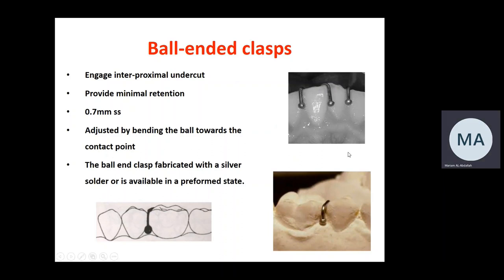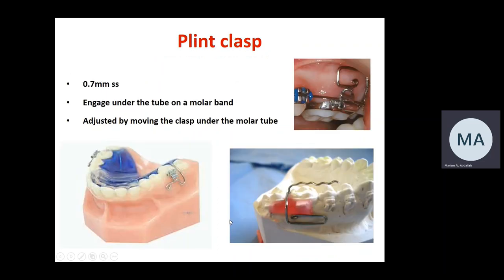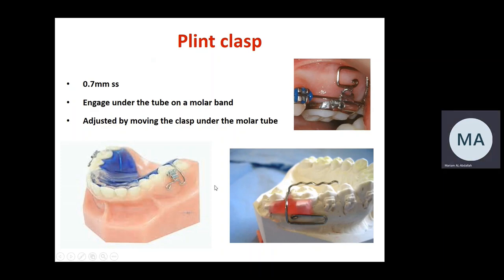Ball-ended clasps engage the undercut within the embrasure between teeth and can be used as an alternative when other retentive components cannot be used. They are made of 0.7 mm stainless steel wire and the ball is fabricated with silver solder or can be bought preformed. The C clasp is also made of 0.7 mm wire and is used with tubes or bands on molars, engaging the undercut beneath the tube.